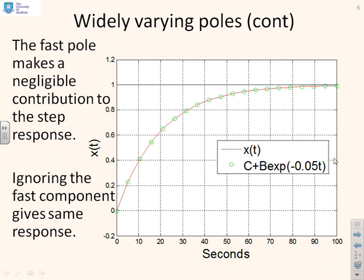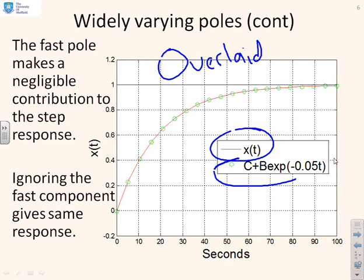Now just to demonstrate a point, using the same example as on the previous slide, what we've done here is we've overlaid x(t), there it is, with what you get if you just use the slow pole and don't include any of the fast pole at all. And what you'll notice is in terms of visual inspection, they are the same. Of course they're not exactly the same, but they're so close that you might as well ignore the fast component altogether because it's not giving any useful change to the response.